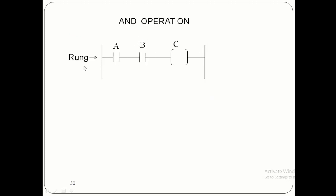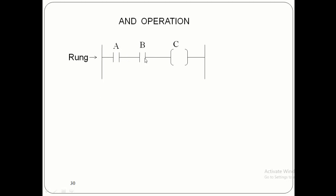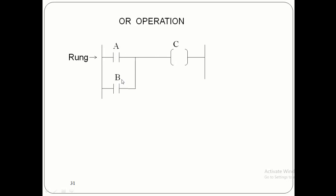The AND operation has two inputs A and B and one output. When both inputs are on, the output will be on; when one of the inputs becomes 0, the output will be 0. In an AND operation the two inputs are in series with the output. In an OR operation we have two inputs in parallel — when either input is on the output will be on; when both inputs are off the output will be 0.